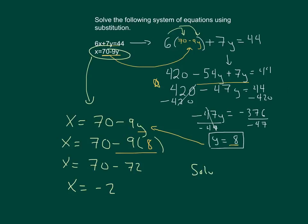The solution is, we're going to write this as an ordered pair. So our x value was negative 2 and our y value is 8. So that would be our solution when we solve this using substitution. That's the solution.